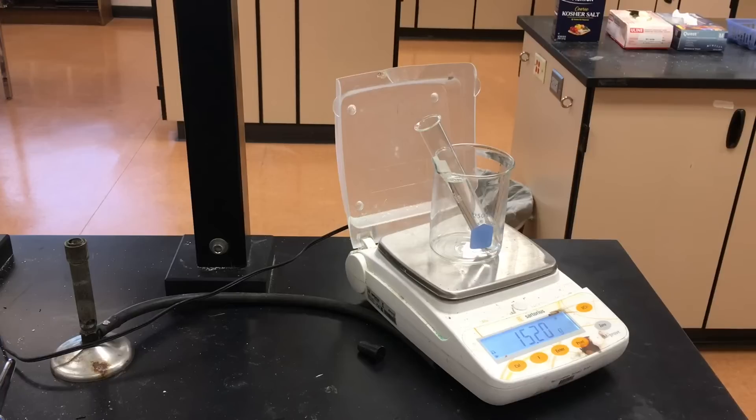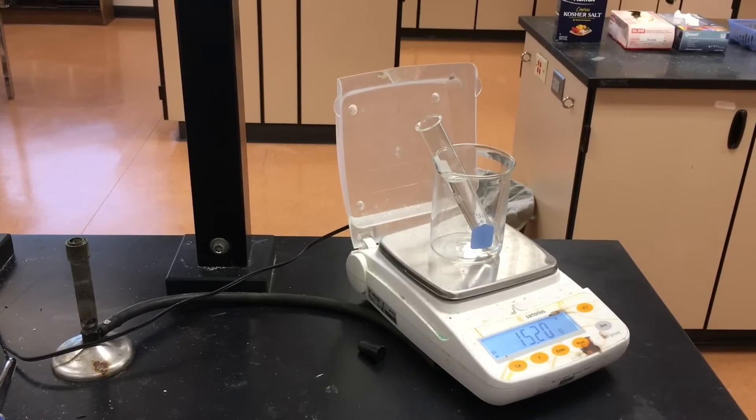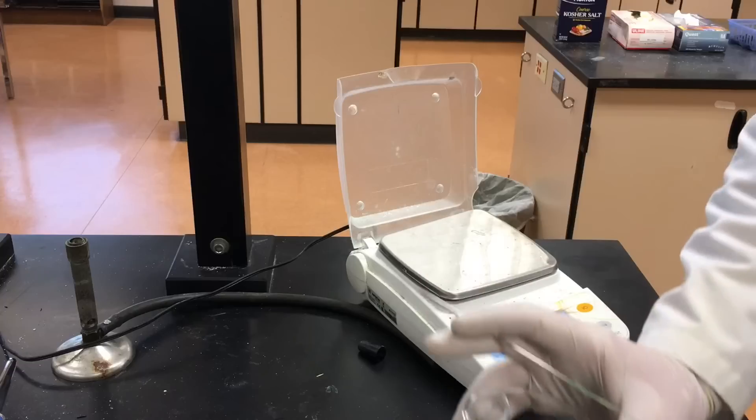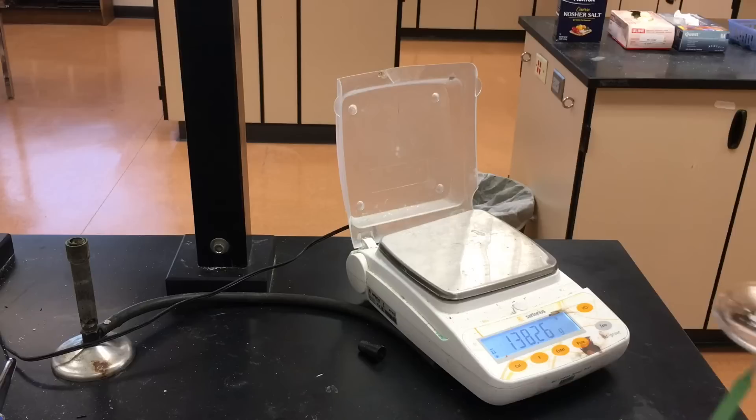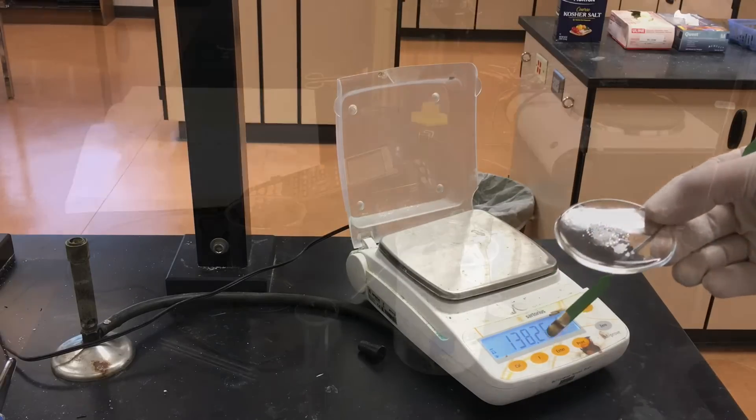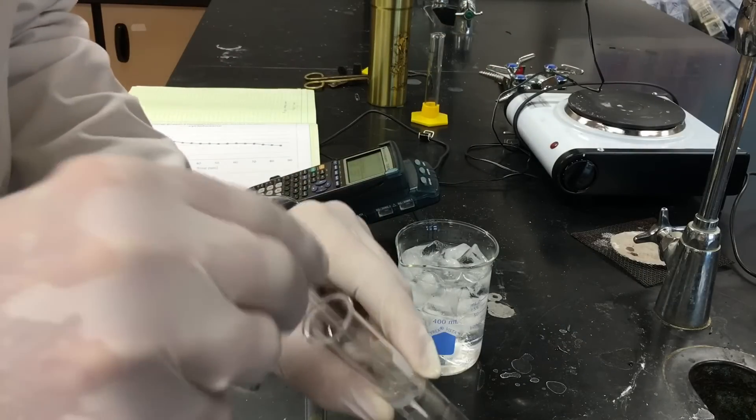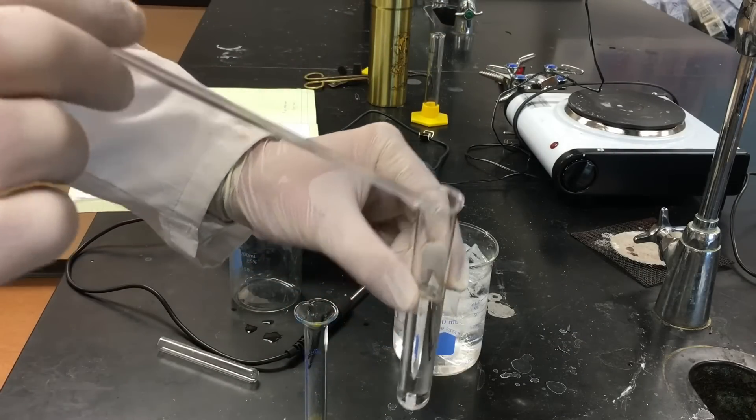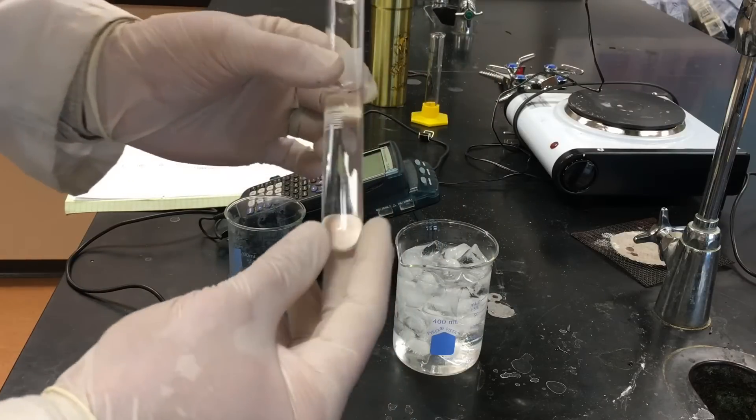Then we're gonna add our unknown to the cyclohexane and make a solution. We're gonna add the unknown carefully and make sure that it's completely dissolved. Our unknown is completely dissolved in the cyclohexane. So now we have our solution. All we have left to do is to find the freezing point of this solution.